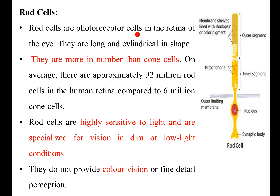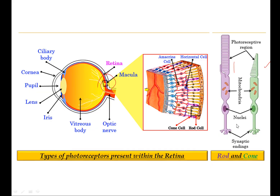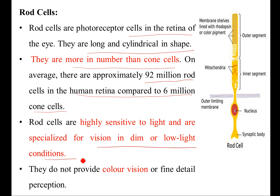Rod cells are photoreceptor cells in the retina. They are long and cylindrical in shape and are more in number than cone cells. On average, there are approximately 92 million rod cells in the human retina compared to six million cone cells. Rod cells are highly sensitive to light and are specialized for vision in dim or low light conditions.